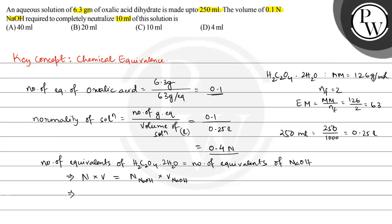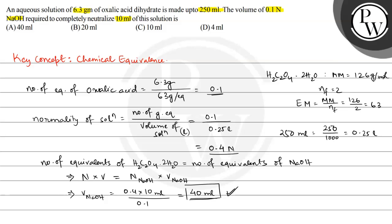We need to find the volume of NaOH. Volume of NaOH equals normality of oxalic acid solution, that is 0.4 normal, multiplied by the volume of oxalic acid solution — which is 10 ml as given — divided by the normality of NaOH, which is 0.1 normal. This equals 40 ml. So 40 ml of 0.1 normal NaOH is required to neutralize 10 ml of this solution. The correct answer is option A: 40 ml.